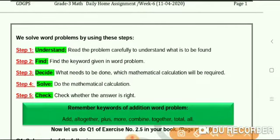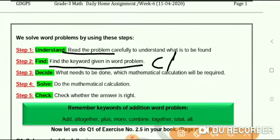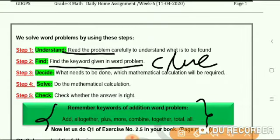First step is understand—that is, you have to read and understand the problem carefully. Step two is find: you have to find which keyword is given in the word problem. And as you know, the keywords of addition are add, altogether, plus, more, combine, together, total, all, as shown here.